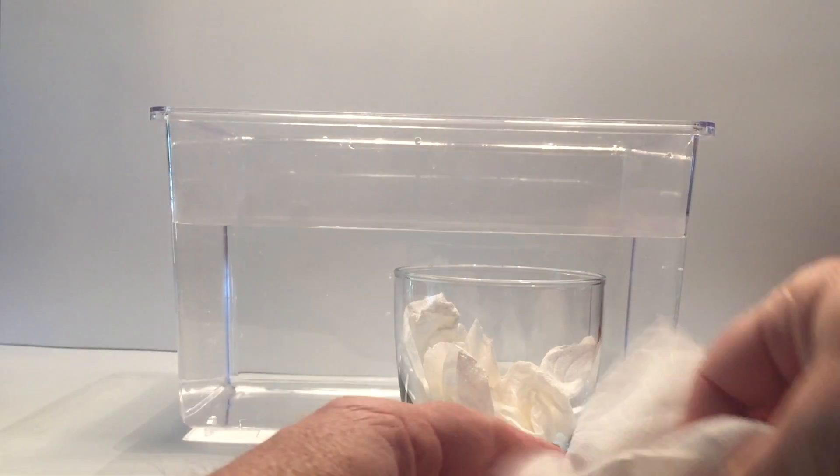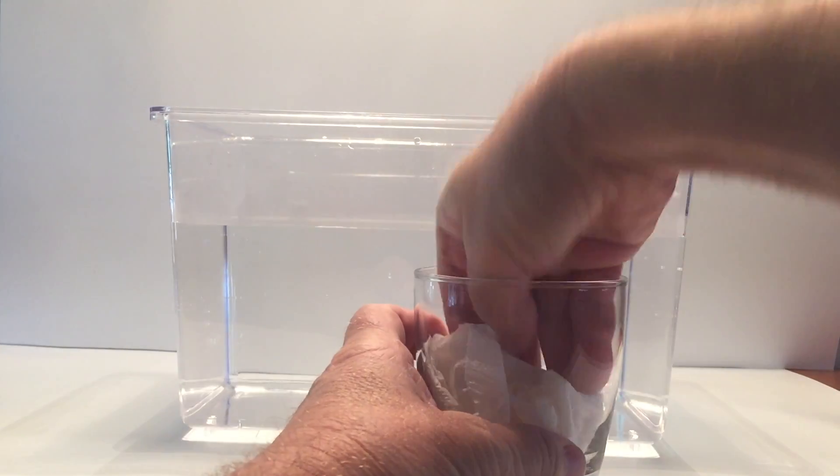To set up this experiment, take a couple pieces of paper towel or tissue, crumble them up, and put them on the bottom of the cup. Then we're going to turn the cup upside down and put it into the water.